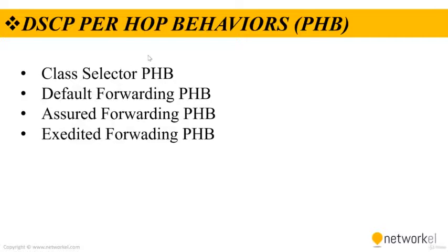There are four PHBs to focus on. Class Selector PHB (CS PHB) uses the first 3 bits of the DSCP field as the CS bits, making DSCP backward compatible with IP Precedence since IP Precedence uses the same 3 bits to determine class. Default Forwarding PHB is used for best-effort service. AF PHB is used for guaranteed bandwidth service, and EF PHB is used for low-delay service.